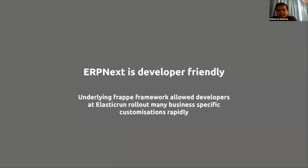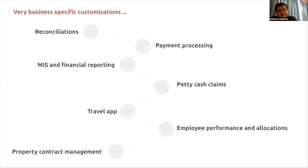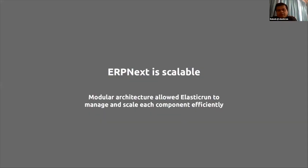The customizations we built — which were not available in ERPNext out of the box — include reconciliations, payment processing, MIS financial reporting, petty cash claims, travel applications, employee performance and allocations, and property contract management. These were very business-specific to Elastic Run, but all built end-to-end on top of Frappe. So thanks to ERPNext and Frappe — it really helped us roll out all these features in such a short duration.